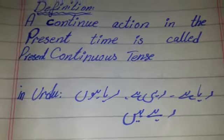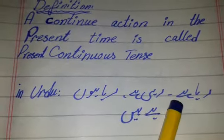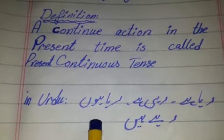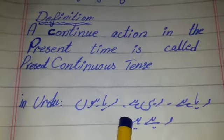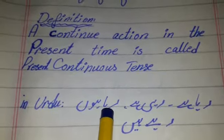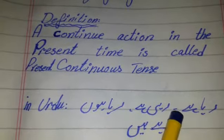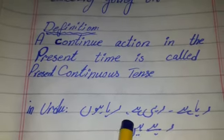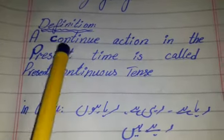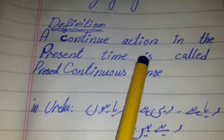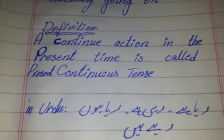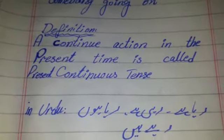In Urdu, we have already learned 'raha hai,' 'rahi hai,' 'raha hoon,' 'rahi hain.' These are the examples in Urdu. At the end of the sentence we use these words. It means that it is present continuous tense because there is an action in the present time — that is called present continuous tense.